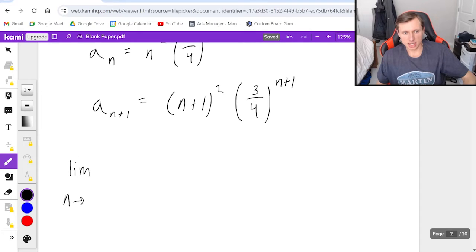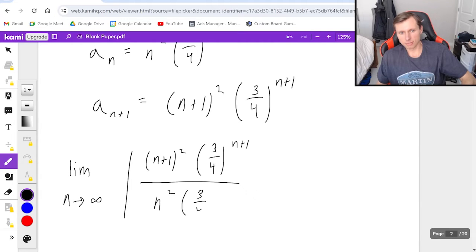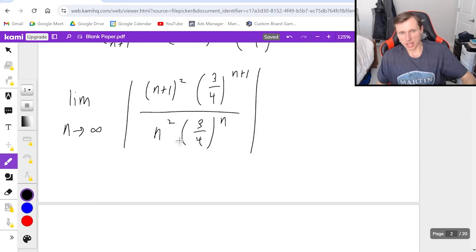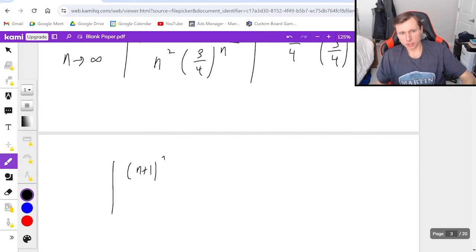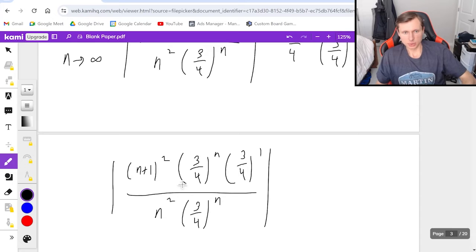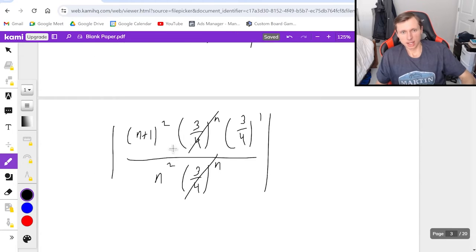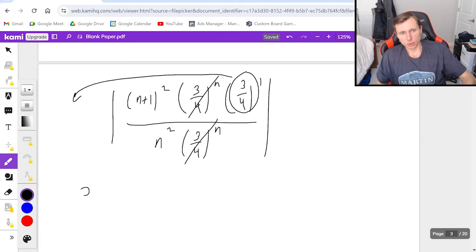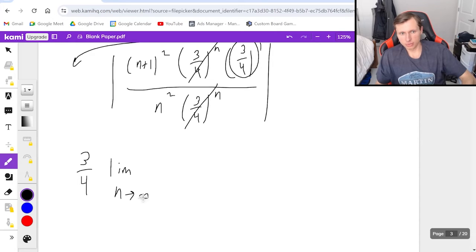I'm going to take the limit as n goes to infinity of the absolute value of n plus 1 squared times 3 fourths to the n plus 1 divided by n squared 3 fourths to the n. Now watch what I do here. This is the crucial step. I'm going to rewrite this as 3 fourths to the n times 3 fourths to the 1. So that means it will become n plus 1 squared times 3 fourths to the n times 3 fourths divided by n squared times 3 fourths to the n. As we see here, the 3 fourths to the n cancel, which is great. And I can also pull this 3 fourths out in front of my limit. So it's really 3 fourths limit as n goes to infinity of n plus 1 squared over n squared.